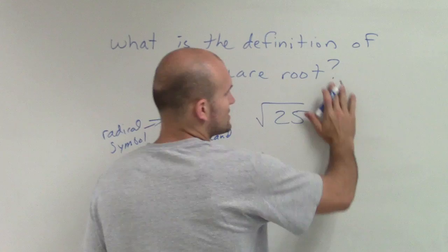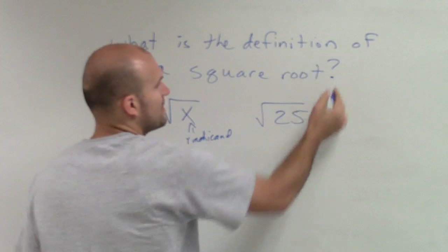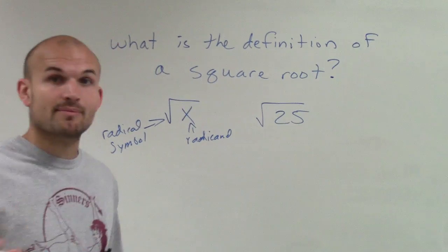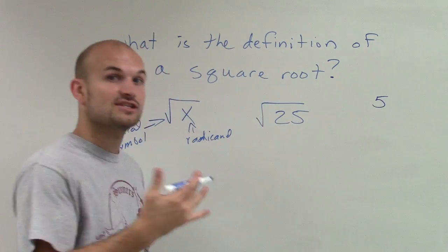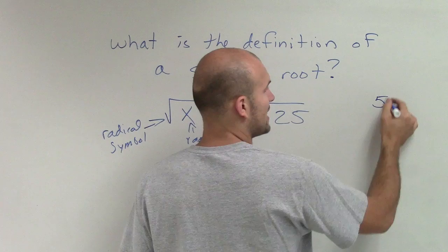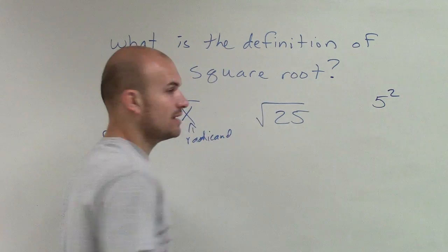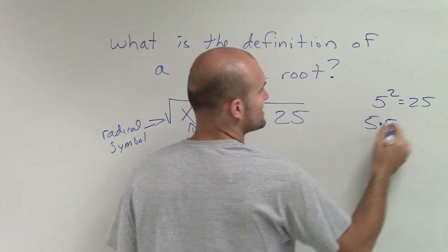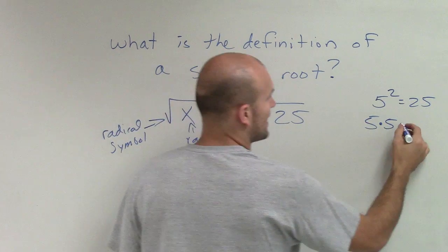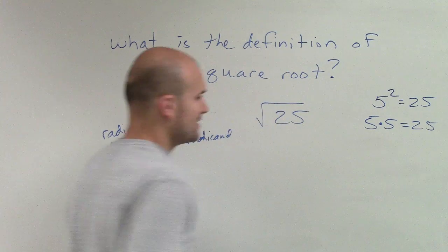One way I like to think about the square root - think about squaring something. If we had 5, if I said square 5, that means we square it, which means 5 times itself twice. 5 times 5 equals 25.